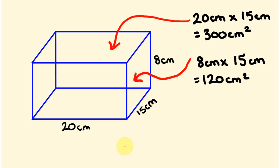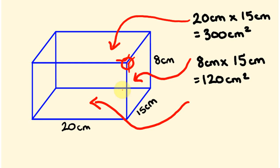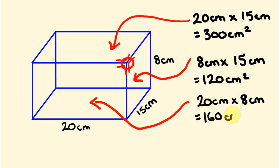The next one — can you spot the one we're looking at? We're going to be looking at this one right here. If you're uncertain of which ones you've already worked out, go to the corner of your shape. We've done this one at the corner, and now we're going to look at this one at the corner. It's another rectangle: length times width, which is 20 centimeters times 8 centimeters, and we get 160 centimeters squared.